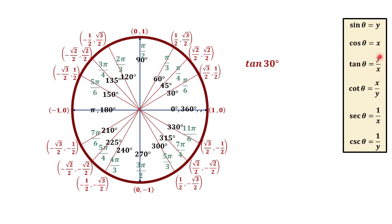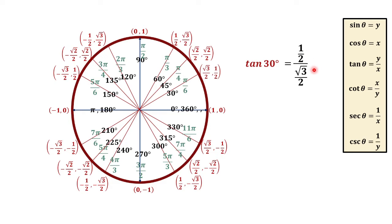Tangent theta is equal to y over x. So in reference to these coordinates, we have x is square root of 3 over 2 and y is one-half. To substitute, we can have one-half over square root of 3 over 2.